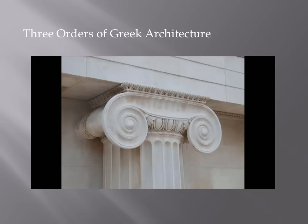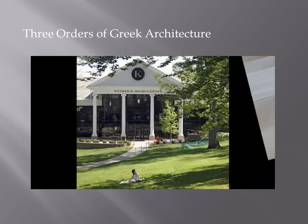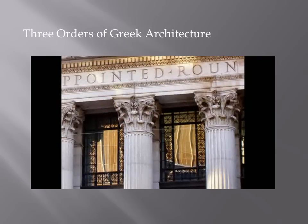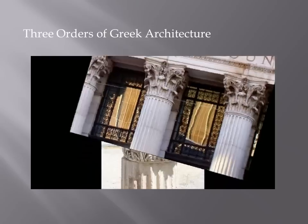The column of the Ionic order was typically nine or fewer diameters tall. The third and final order is the Corinthian, which is the most ornate, characterized by another slender fluted column like the Ionic but with a very ornate capital decorated with two rows of acanthus leaves and scrolls. The acanthus is a type of plant that was incorporated into the architecture of ancient Greece.